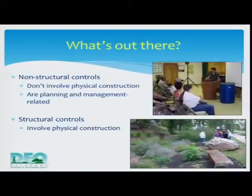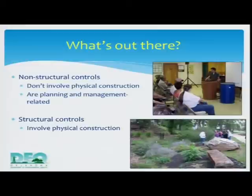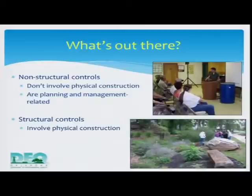Non-structural controls don't involve physical construction — they're planning and management related. One example is a rain barrel class at the city of Stillwater, which is an example of a non-structural BMP: educating your citizenry on what's out there in post-construction stormwater management. Structural controls involve actual physical construction, like the rain garden installed in Rogers, Arkansas. Northwest Arkansas has a program working towards installing a certain number of rain gardens in various locations across the region.